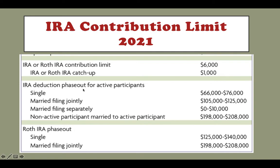Now, for contributions to the traditional IRA — usually you can deduct the tax on the traditional IRA. Let's say you have a part-time job, but your employer does not provide a retirement account. In that situation, your contribution to the traditional IRA — let's say you put $6,000 in it — all $6,000 is tax deductible.